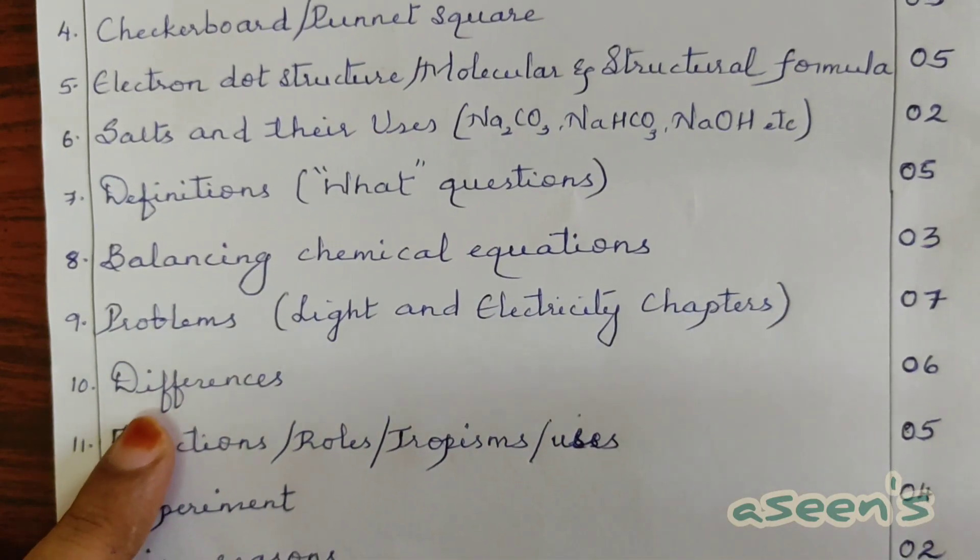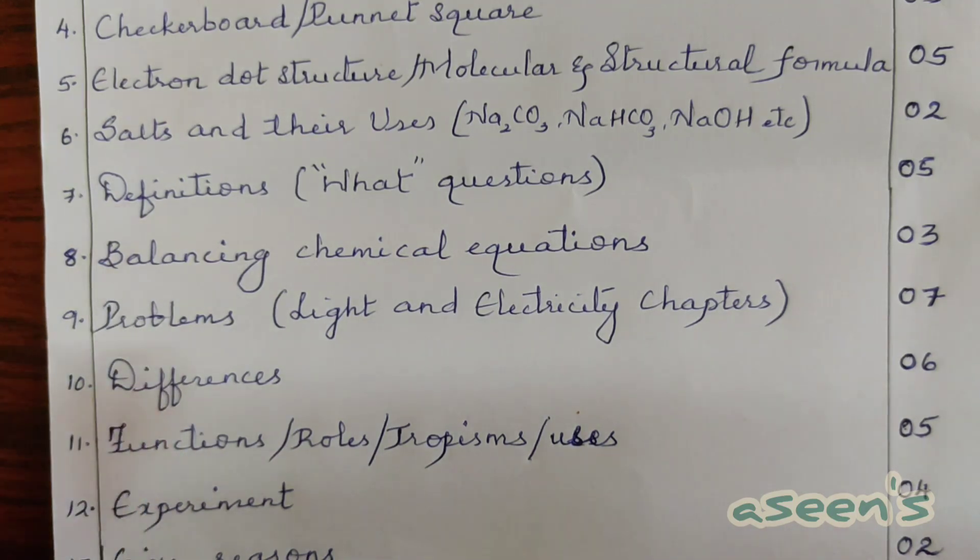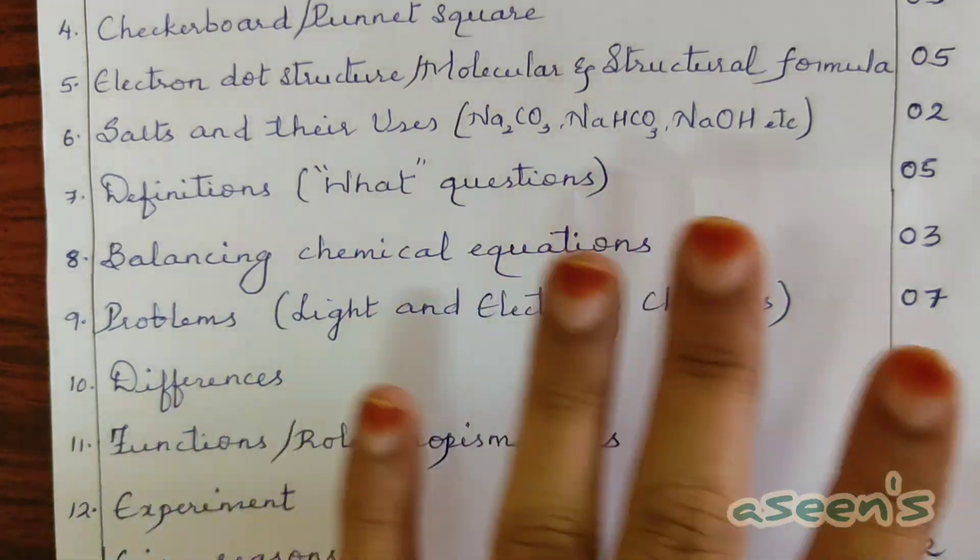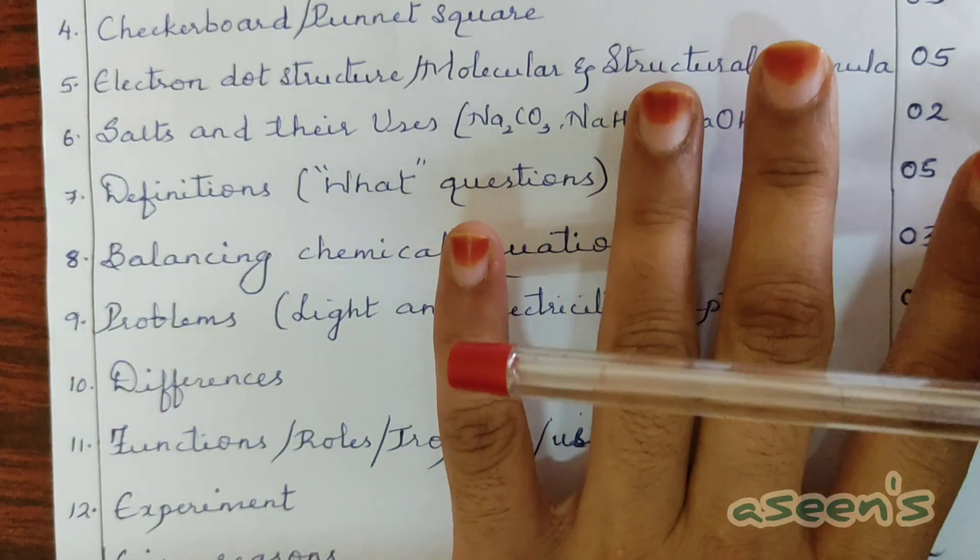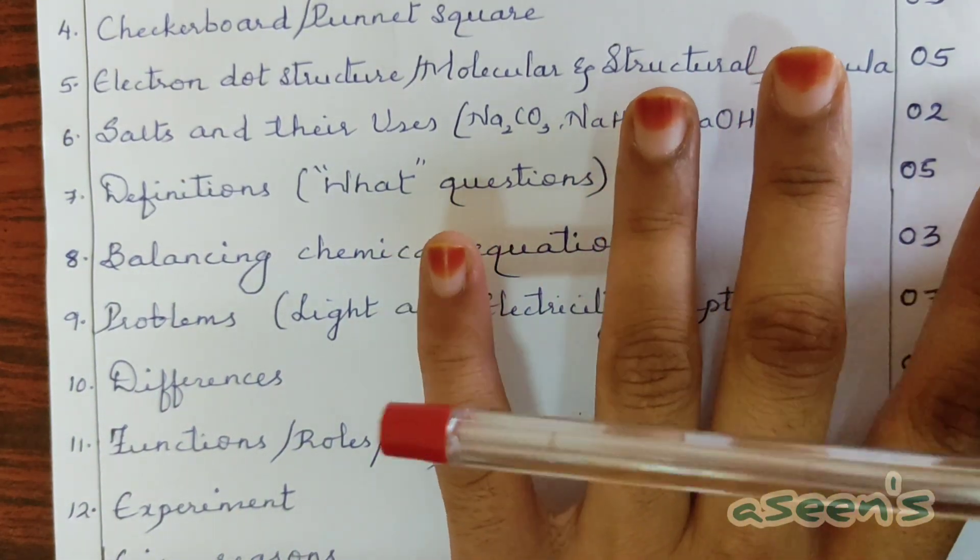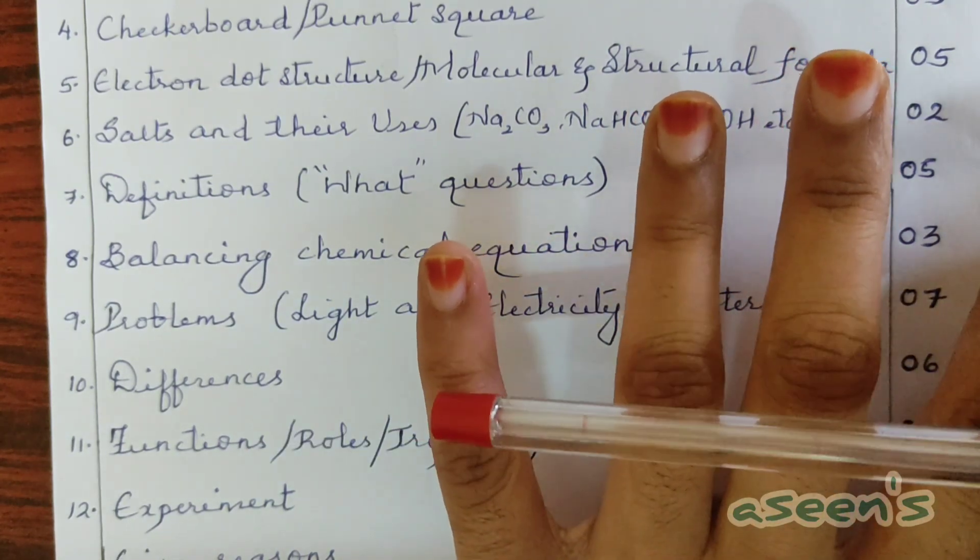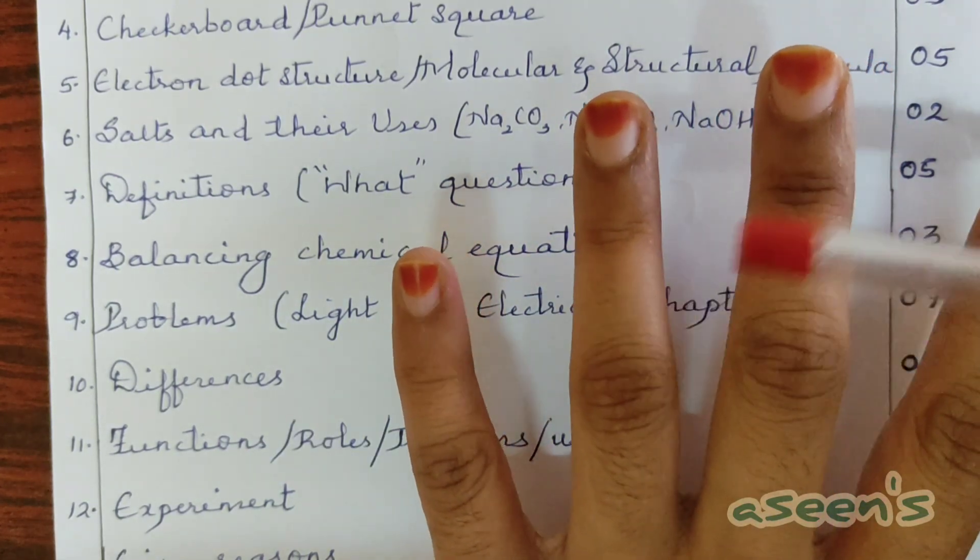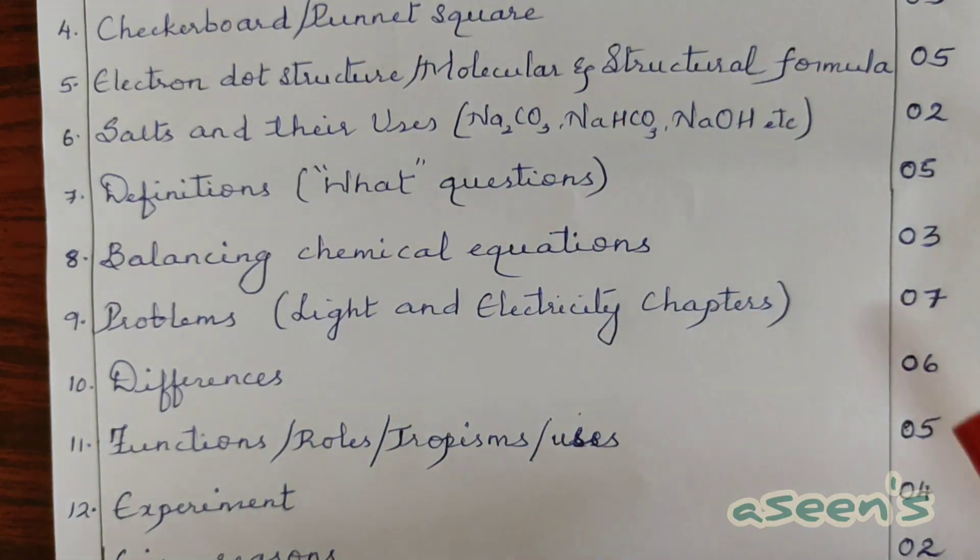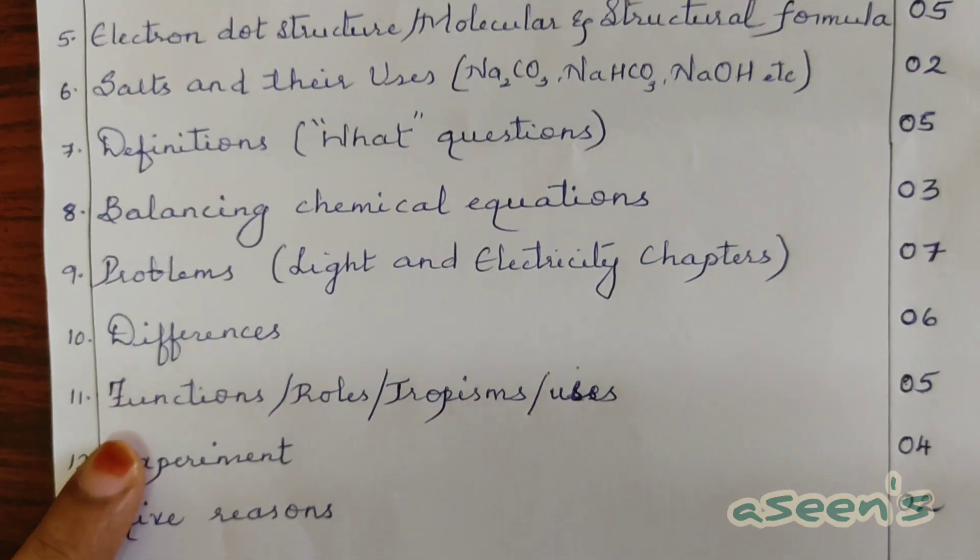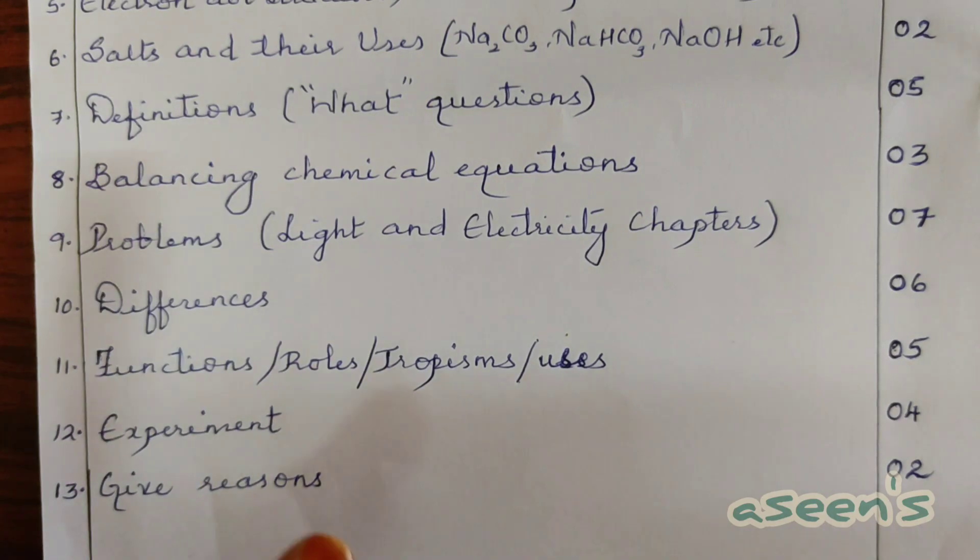Next is differences - differentiate questions for a total of six marks. Since your paper is divided into physics, chemistry, and biology, a two-mark question regarding differences will be asked in each part. A list of differences will be provided to you, even for the trickier ones, which I believe you will find helpful.